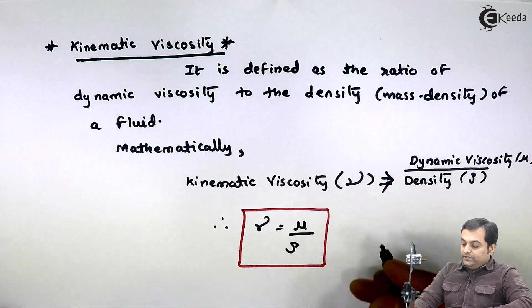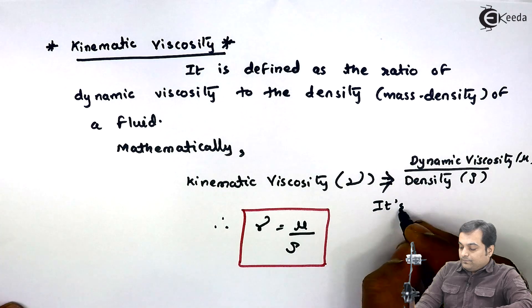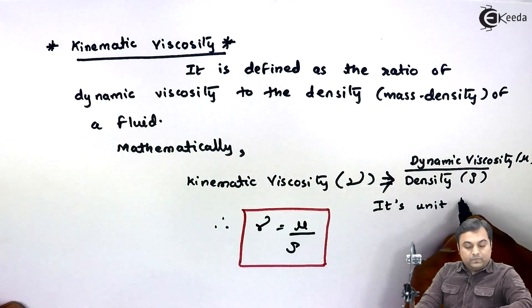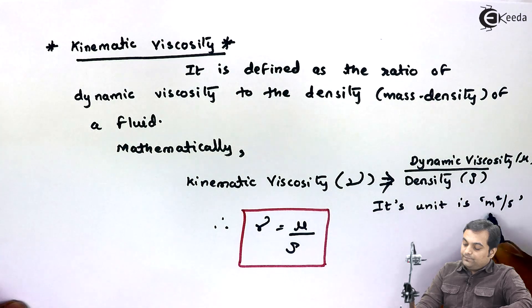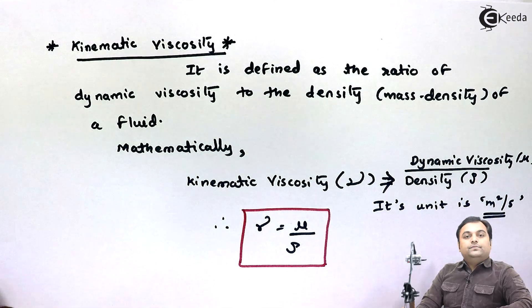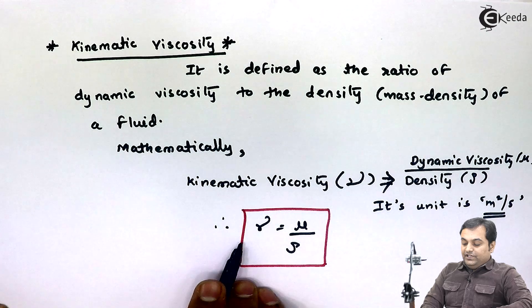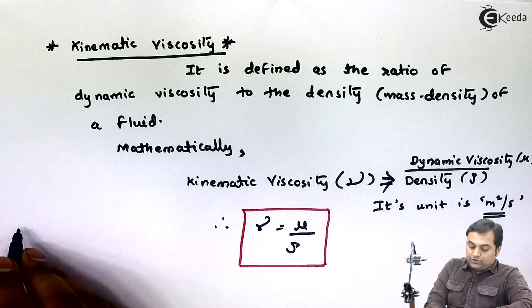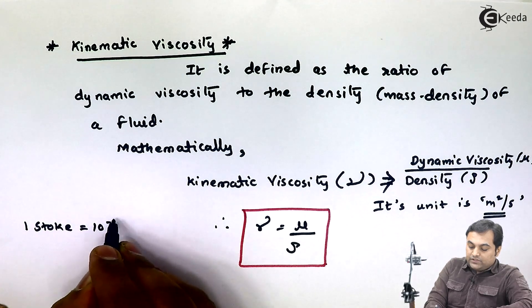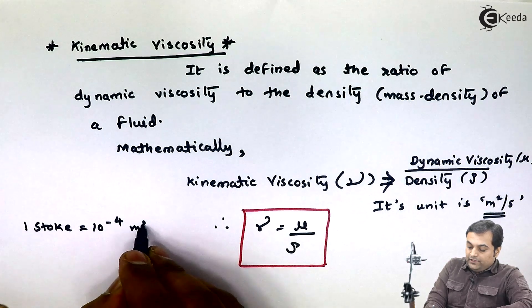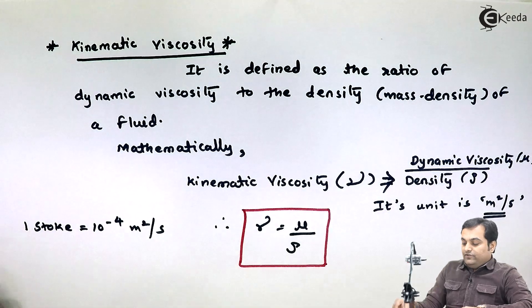Next, its unit is meters squared per second. And sometimes kinematic viscosity is given in the form of stokes. So one stoke is equal to 10 raised to minus 4 meter squared per second.